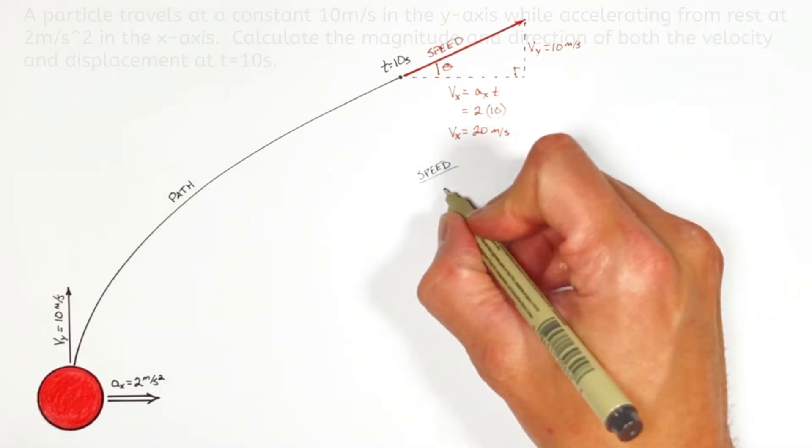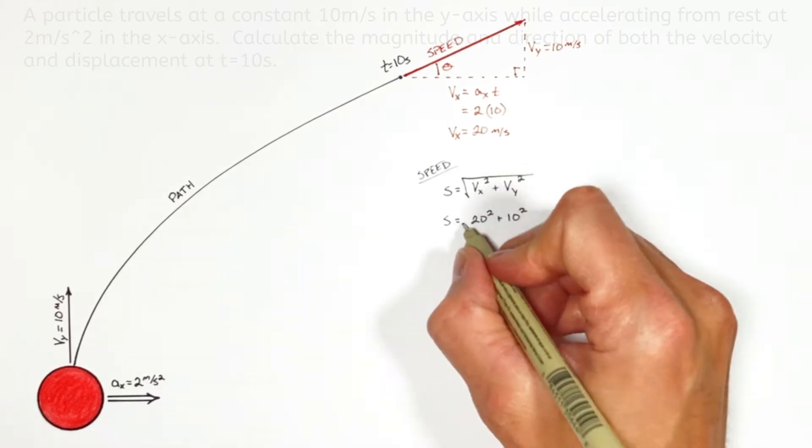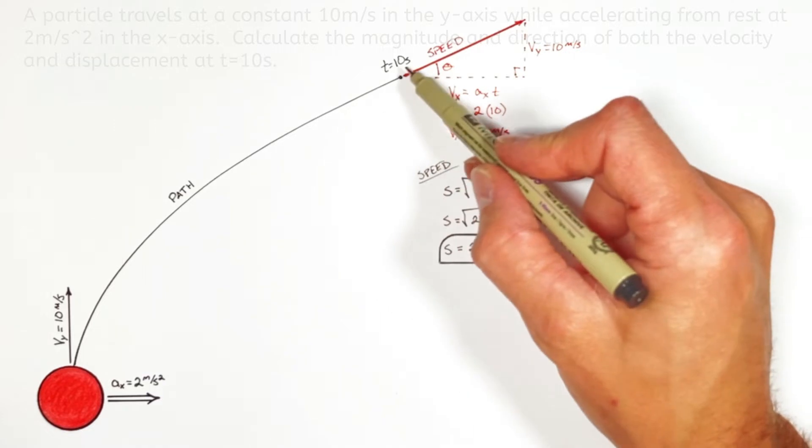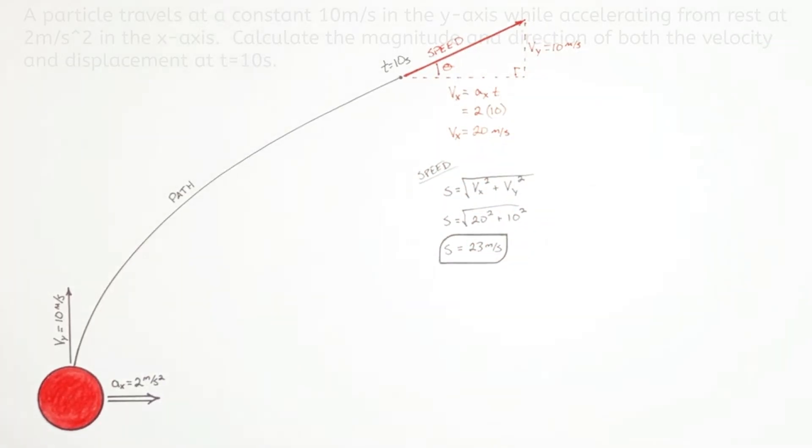So to solve for this speed we simply need to apply the Pythagorean theorem. And we find that after 10 seconds when the ball reaches this point right here it's moving at a speed of 23 meters per second.